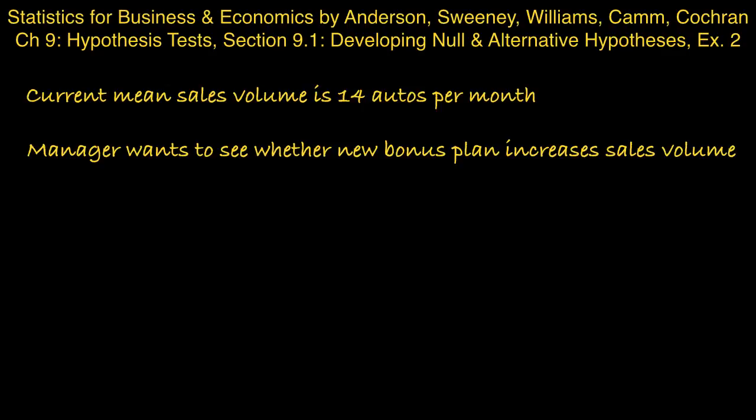Part A: develop the null and alternative hypotheses most appropriate for this situation. We want to see whether the new bonus plan increases sales volume, so we put μ greater than 14 in the alternative hypothesis, and that means in the null hypothesis we have μ less than or equal to 14.